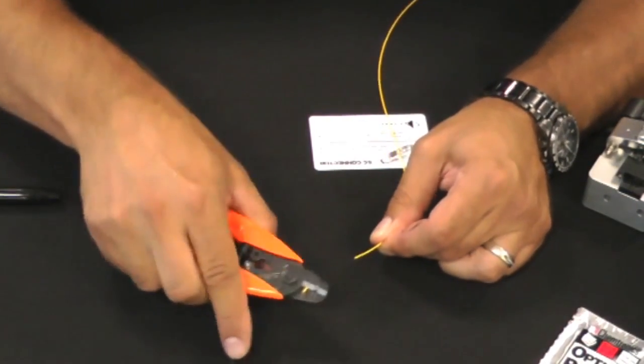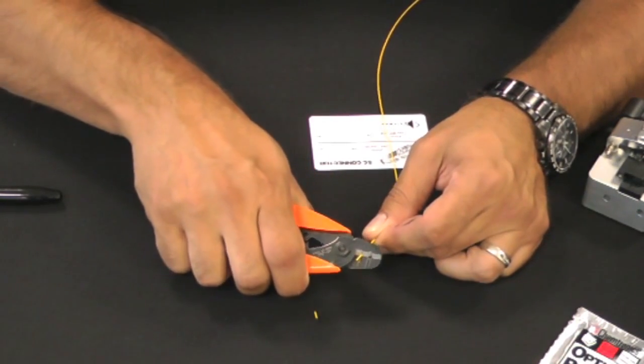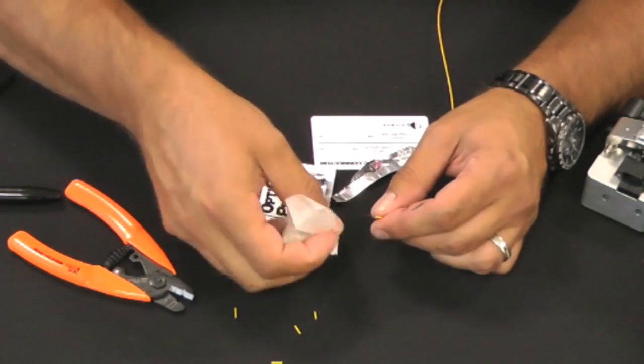Using the 900 micron buffer strippers, remove quarter inch sections at a time to avoid breaking the fiber. Using the provided alcohol wipe, clean the fiber to remove any debris.